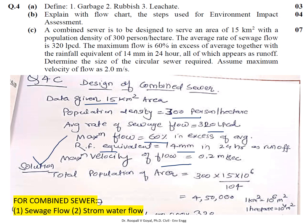Solution — Step 1: Population. Given 300 persons per hectare, and our area is 15 × 10⁶ m². With population density of 300 per hectare and 1 hectare = 10⁴ m², the total population of the area is 4,50,000.